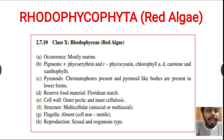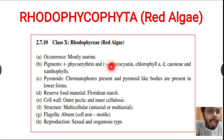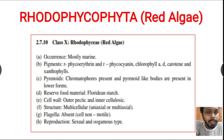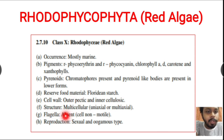Key characteristics of red algae: occurrence is mostly in marine water. Predominant pigments are phycoerythrin and phycocyanin. Pyrenoids — proteinaceous compounds outside the chloroplast — are present. Reserve food material is floridian starch. The outer cell wall is made of pectin and the inner part of cellulose. Structure is multicellular. Flagella are absent. Reproduction is sexual, oogamous type.